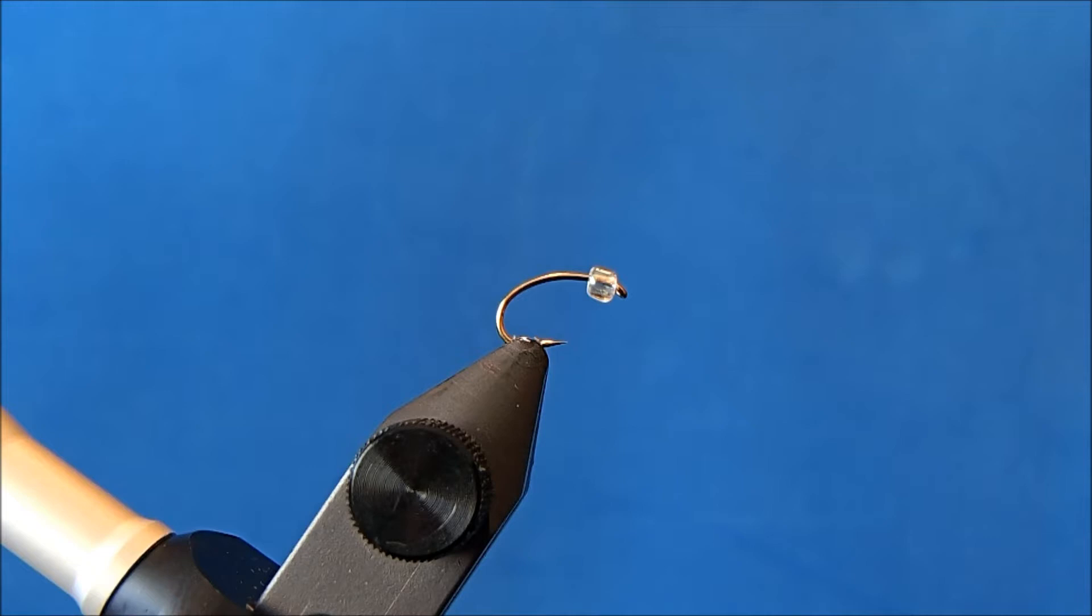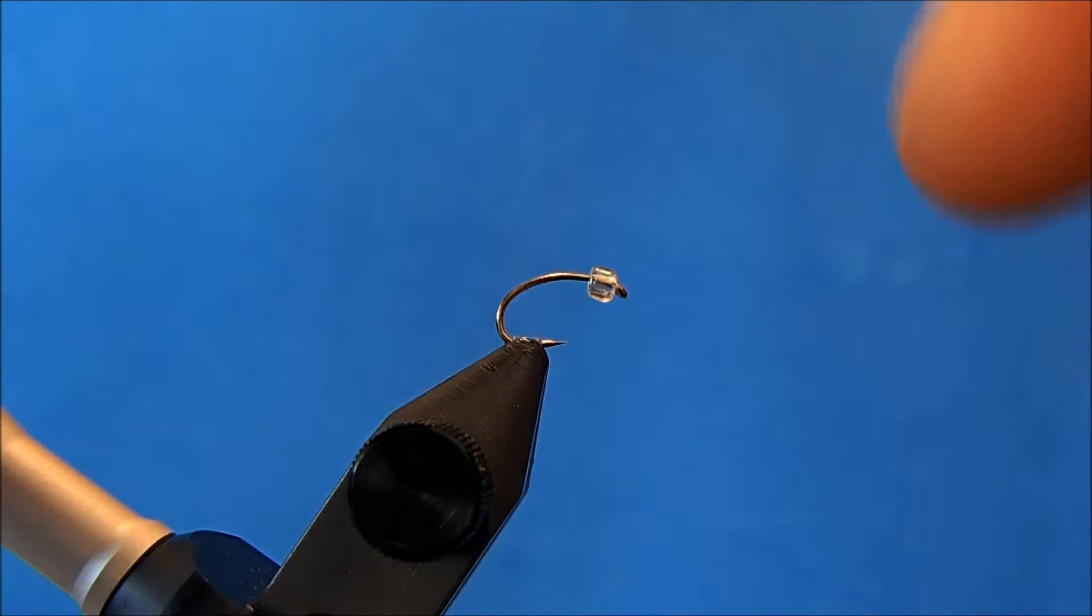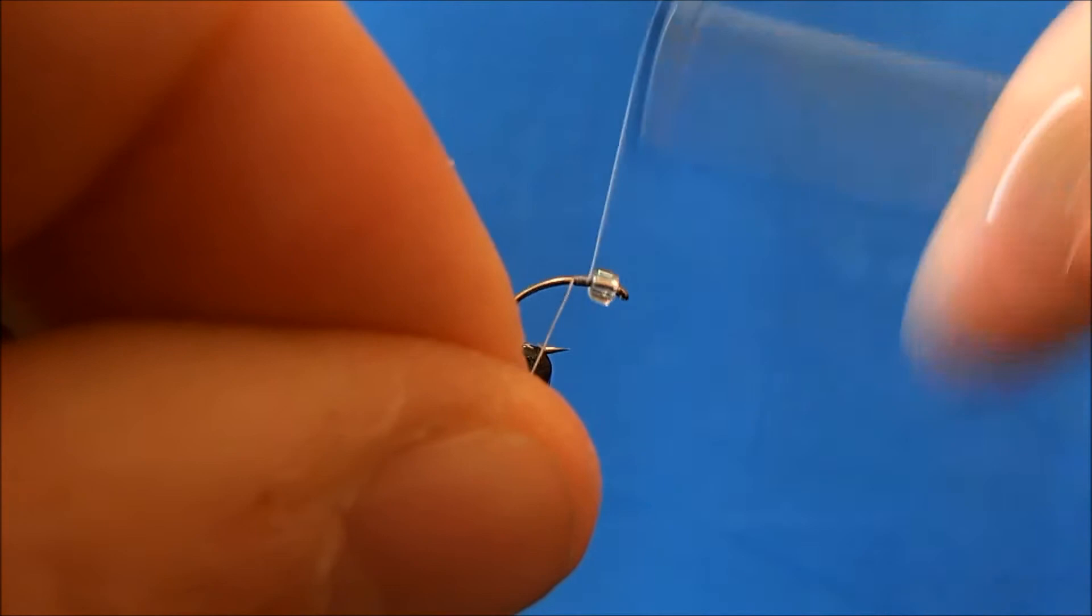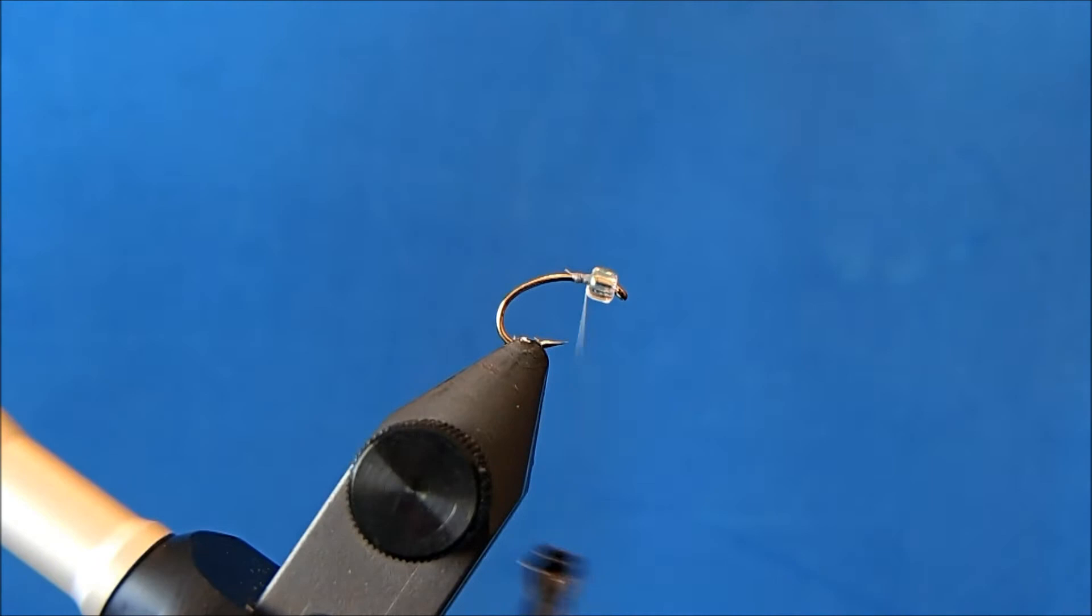I'm going to tie my version of a Spring Creek midge. I'm starting off with a size 16 scud hook in the vise and I've already got a glass bead on the front. The thread that I'm going to use is an 8/0 gray. So I'll take some turns of that behind the bead and then trim that excess thread.